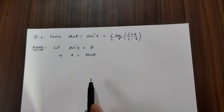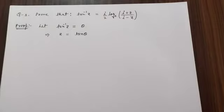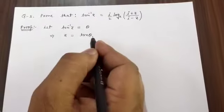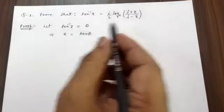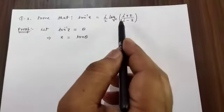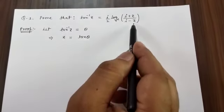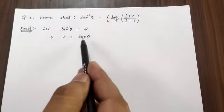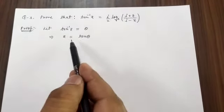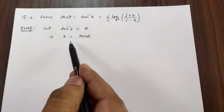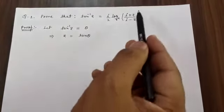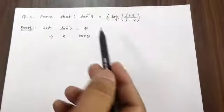Now look at what we need to prove — we have (i+z)/(i-z). So z = tan θ. If we divide both sides by i, that means dividing by i on both sides, and then we apply the componendo and dividendo property.